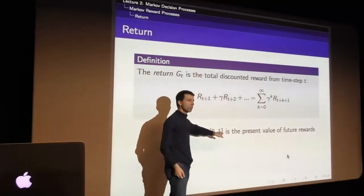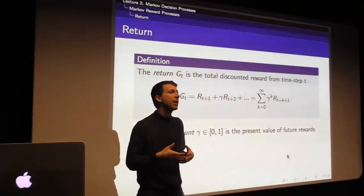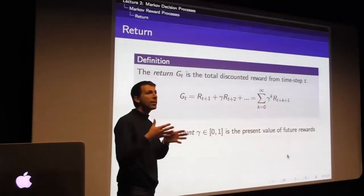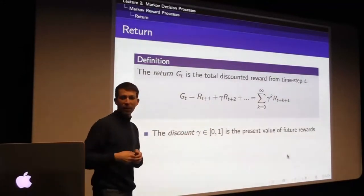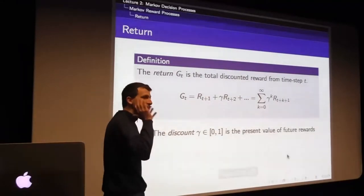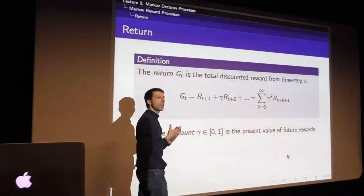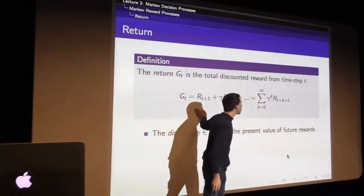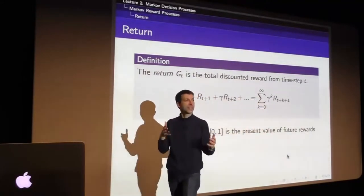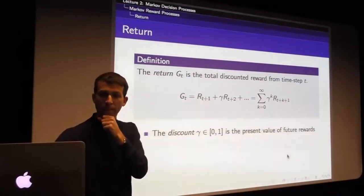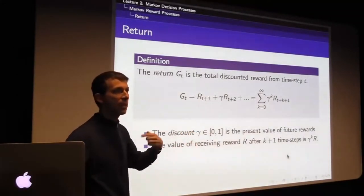The discount factor must be between 0 and 1. It tells us the present value of future rewards - how much I care now about rewards I'll get in the future. A reward k+1 time steps later is worth gamma^k times the reward. Gamma = 0 means maximally short-sighted: you only care about the immediate reward. Gamma = 1 means maximally far-sighted: you care about all rewards going infinitely far into the future, assuming the process eventually terminates with zero rewards.